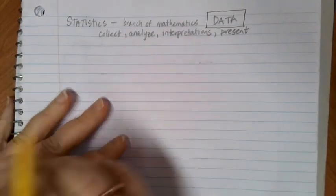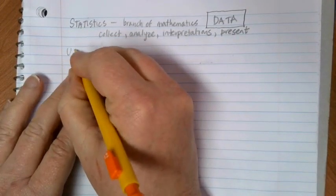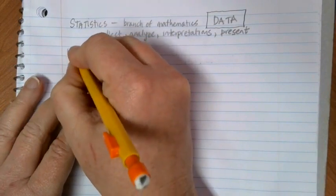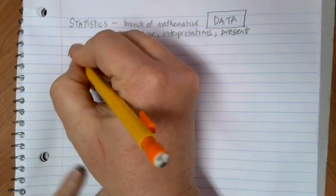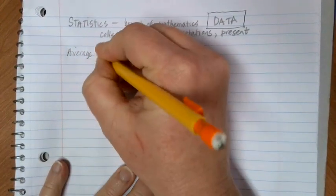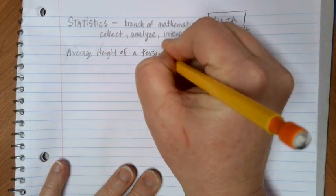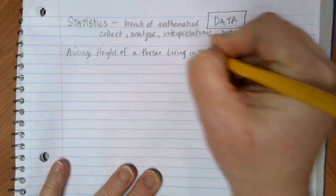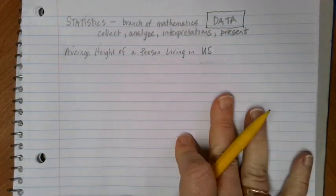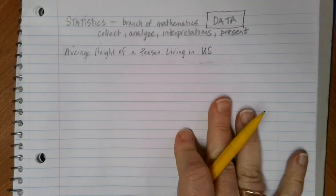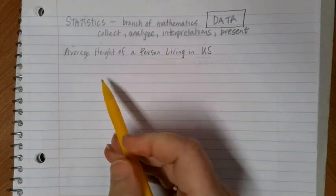Let's think of an example. Let's suppose that I am interested in knowing what the average height of a person living in the U.S. is. If this is the group that I'm interested in, this is going to be a hard number for us to physically calculate, because we would need to talk to every single person living in the U.S. and figure out what their average height is.